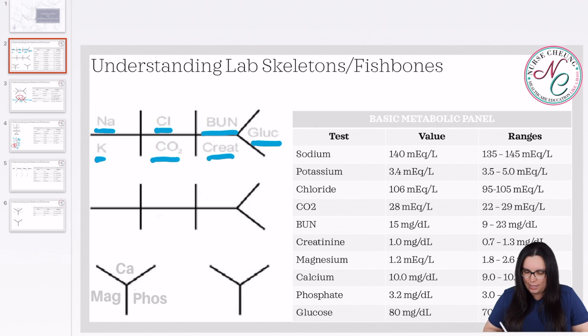And then our second fish bone has our calcium, MAG, and FOS. So what we're going to do and what I do is I begin by looking at what my normal values are and what my normal values are not. And I write my normal values in blue and my abnormal values in red.